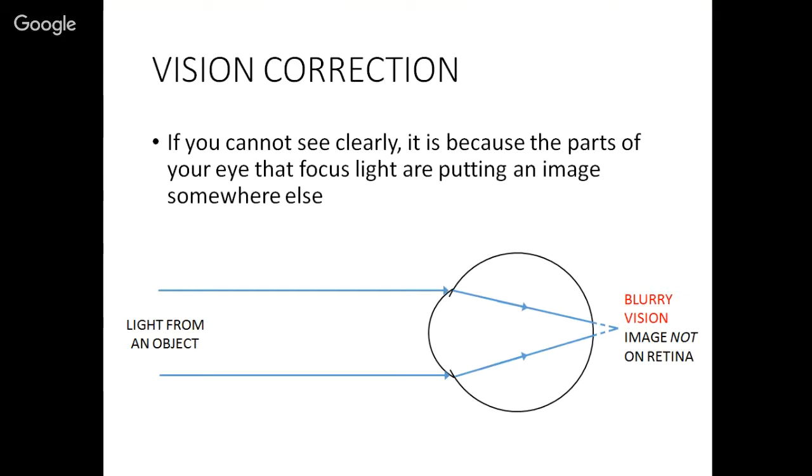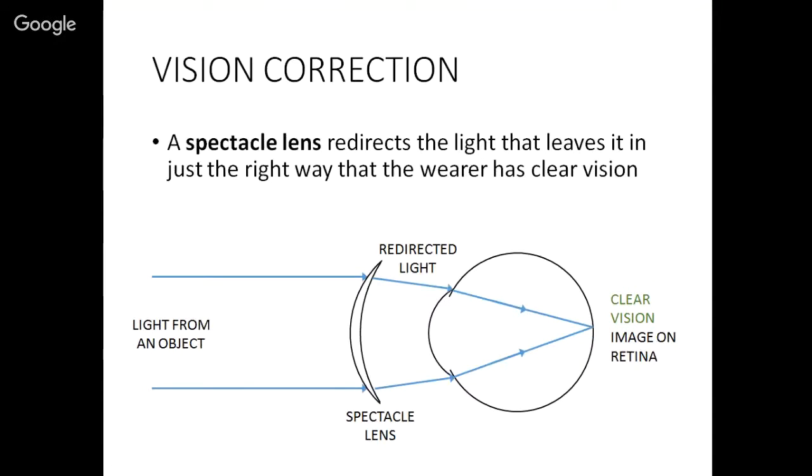However, the retina does not have to match where the focusing components of the eye put an image. If the eye wants to put an image behind the location of the retina, you wind up getting a blur circle or blurry vision. So your vision won't be clear if the light focuses somewhere besides the retina. So if you don't have clear vision, what can you do about it?